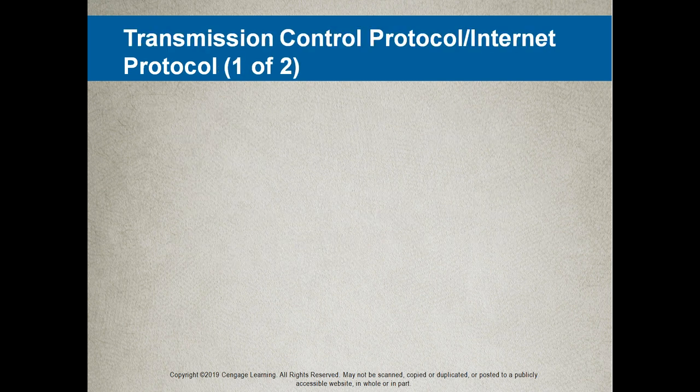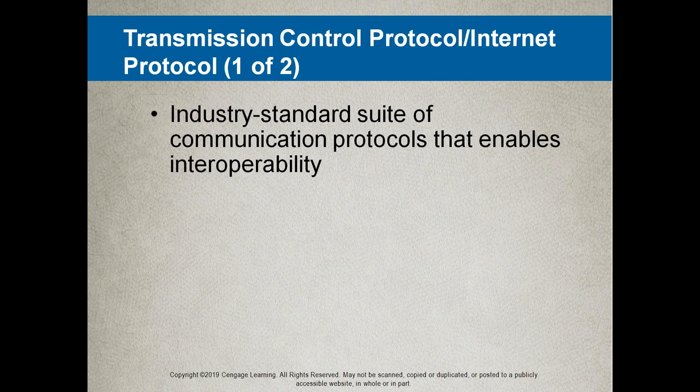If we take a look at the Transmission Control Protocol / Internet Protocol that is used on the internet, it is an industry standard suite of communication protocols that enables interoperability. Suite in this case means a group of protocols that together make up TCP/IP. So TCP/IP isn't just one protocol — it is a collection of protocols that perform different functions and allow computers to interoperate and communicate over the internet.